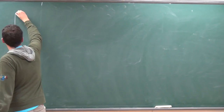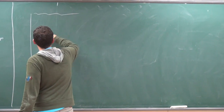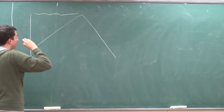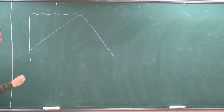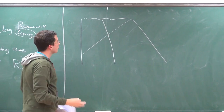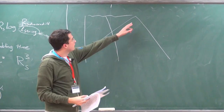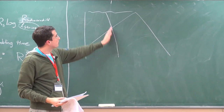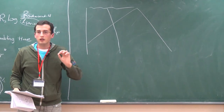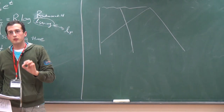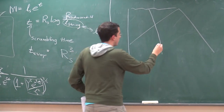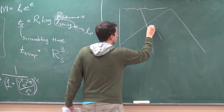The other point of view is the point of view of someone who falls in. Here is the black hole again, and here's somebody who's falling in. The person who stays outside sees the membrane. The person who falls in — what do they see? The answer is supposed to be that they see nothing. They don't see anything. No membrane.